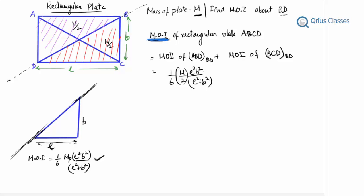So this will be the same because the variables are the same as in the formula, plus 1/6 times M/2 times L²B²/(L² + B²), which essentially gives us ML²B²/[6(L² + B²)].